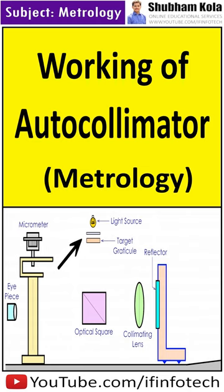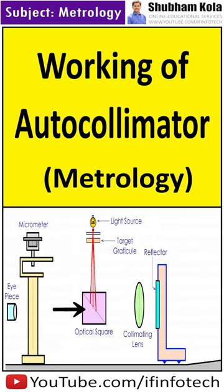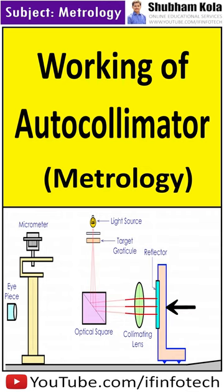During the working, the light rays are going to split by the target graticule. Through the optical square, the light rays change direction and go to the reflector by collimating lens. If the reflector is perpendicular to the optical axis, the light rays are reflected and go in the same path, visible to the eyepiece at point O.